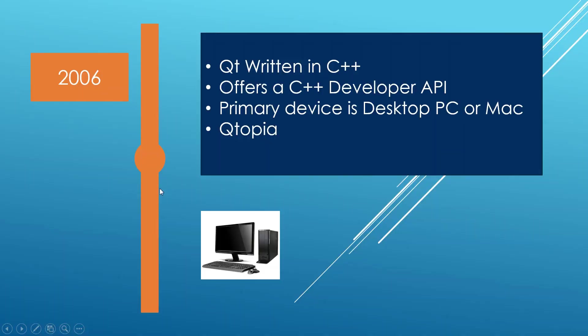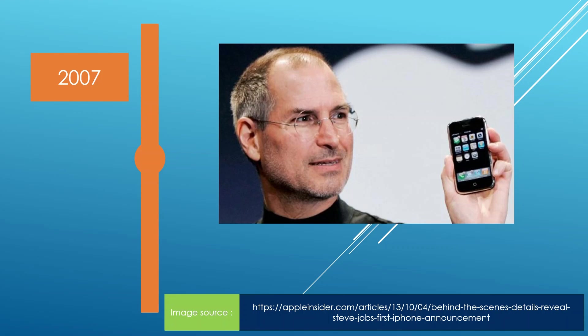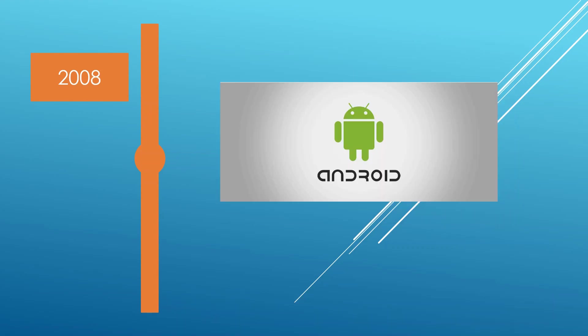By the mid-2000s they reported that over a million devices already ran the Qtopia ecosystem, which was designed to run on these mobile-like devices. Then in 2007, Apple announced the iPhone, and in 2008 Android came about — and everybody was basically using Android or iPhones.